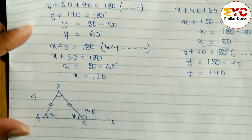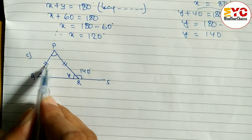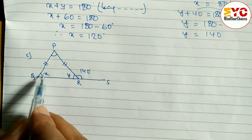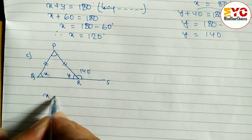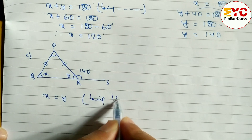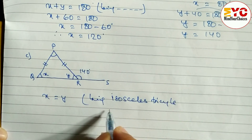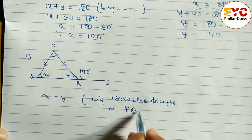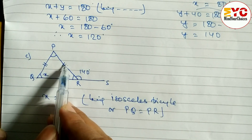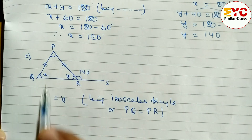Now look at the last question of this video. Here you can see these two lines are equal — it means PQ and PR are equal — which means this is an isosceles triangle. An isosceles triangle means the base angles are also equal, so we can write X is equal to Y. The reason being isosceles triangle, or you can write PQ is equal to PR. An isosceles triangle means two sides are equal; if two sides are equal, the base angles are also equal. Now we have to find out the value of Y, then we can get the value of X.